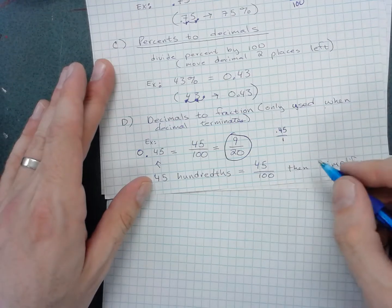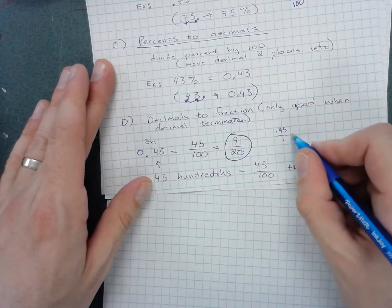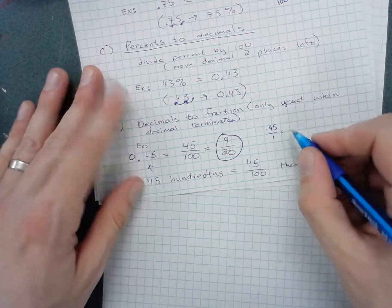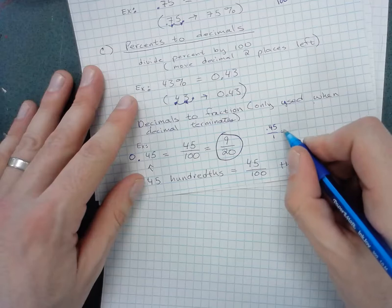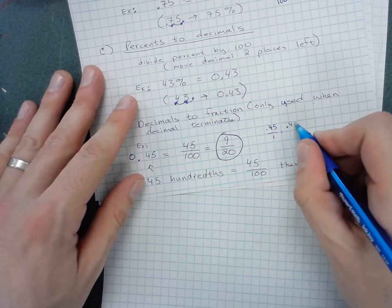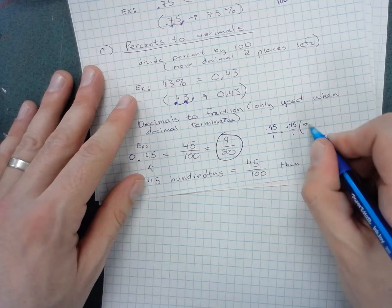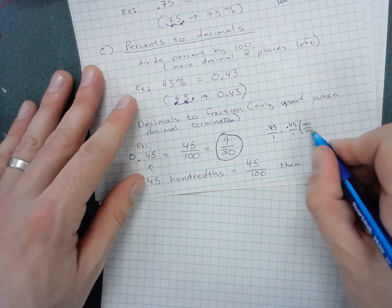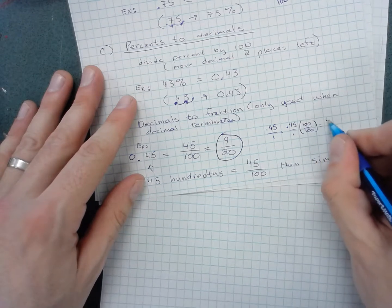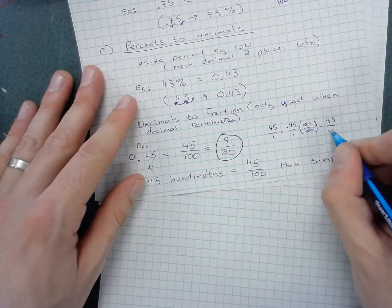0.45 over 1—any number is just itself over 1. Multiply the numerator and denominator by 100, effectively moving the decimal place two spots to the right, which equals 45/100.